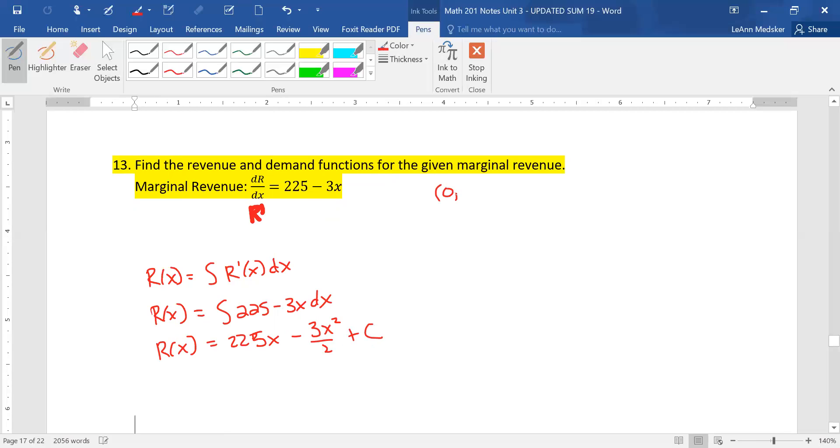And it is understood that anytime you're doing a revenue function, if you have zero items produced, you make zero revenue. So that is an understood point you can use for revenue. So r of zero equals 225 times zero minus three halves times zero squared plus c. This is zero. This is zero plus c. So c is zero.